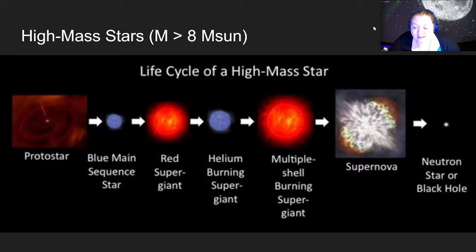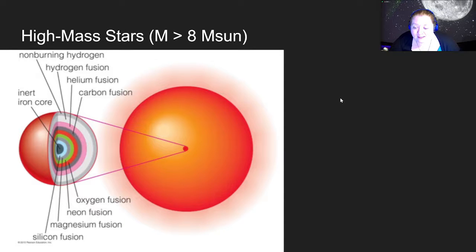Now let's look at high-mass stars — those more massive than eight times the mass of our sun. They start out similarly: main-sequence star fusing hydrogen into helium, it runs out, the core starts collapsing, we get shell fusion that pushes out the outer layers into a supergiant, until helium starts burning in the center, then that runs out and we get back to the red giant phase again. But the difference with high-mass stars is this process continues to happen over and over. You don't just have hydrogen fusion then helium fusion — you then have carbon fusion, oxygen, neon, magnesium, silicon, all the way down to iron. The star keeps going back and forth, getting smaller once fusion restarts and puffing back up once it stops, until it switches to the next phase.